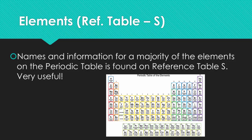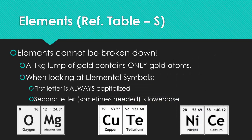Names and information for the majority of elements on the periodic table are found on reference table S — it's very useful. Remember, all elements are pure substances on their own and cannot be broken down. A one kilogram lump of gold, which is a pure element, contains only gold atoms. When looking at elemental symbols, the first letter is always capitalized, and if there is a second letter it will always be lowercase. Some elements have one letter, some require two, and a few toward element 118 required three but have since been changed. Some symbols don't match their English names because we use their Latin roots.